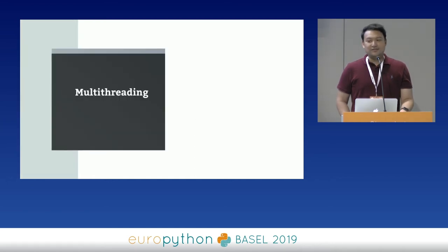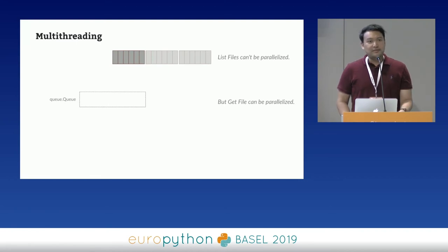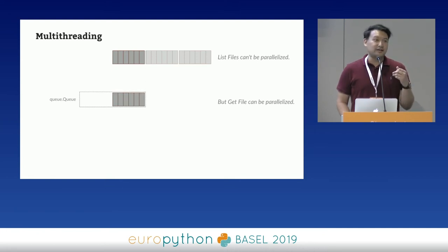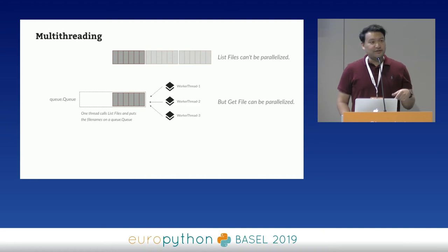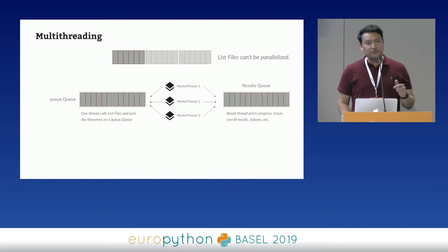Now we can get to multi-threading. It's been in Python for a long time, well-studied, and it's easy to get started. What we're going to use here is a producer-consumer queue — a fairly standard pattern. We take one page of results and instead of downloading immediately, we put those file names in a queue. Worker threads pull off that queue and download files concurrently. In the main thread, we keep running the list call, putting stuff on the queue, while workers continually download. At the end, workers put results in a result queue so we can track status, progress, and errors.